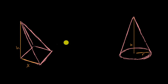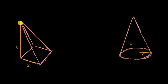I have two different three-dimensional figures here. I have a pyramid on the left and a cone on the right. We know a few things about these two figures. First of all, they have the exact same height. This length right over here is H, and this length going from the peak to the center of the base of the cone is H as well.